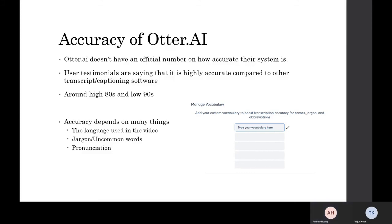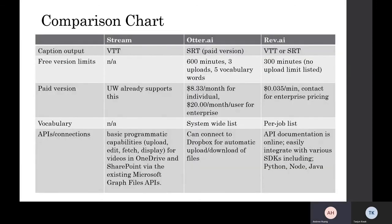Essentially, what we have in the picture is Otter AI's custom vocabulary list where you can input words, and this can help improve the accuracy when you upload or record a video. So that does it for me. In the next video, Steven Tosh will go over a comparison as well as testing of Otter AI compared to other different captioning softwares.